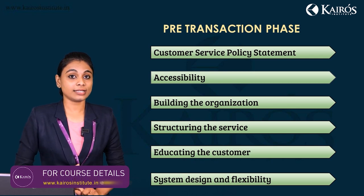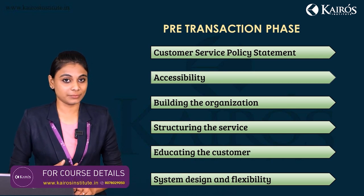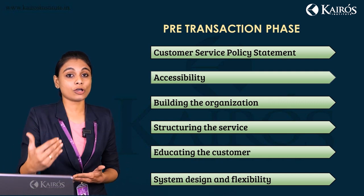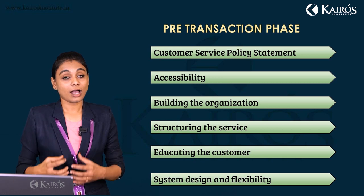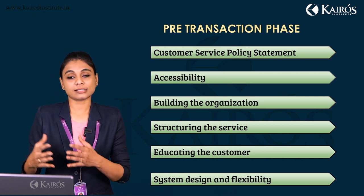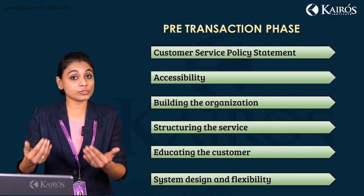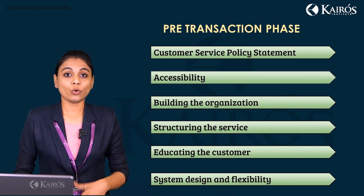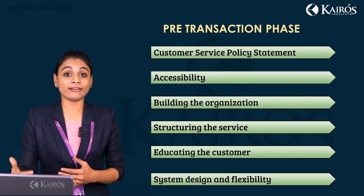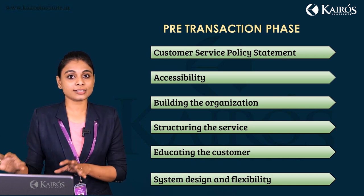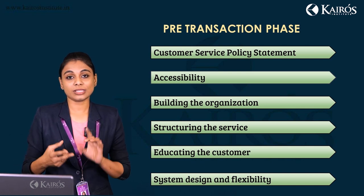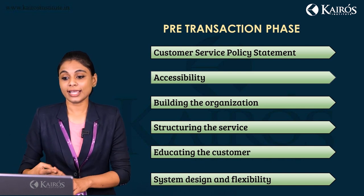The second element is accessibility — the ease of accessing the product, or how readily available the product is in the market. If a customer already knows about the product and wants to order it, they should know where to look for it and where it is available so they can place their order.